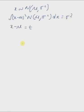and sigma squared. Our goal is to prove that the integral of (X - mu)² multiplied by the normal distribution dx equals sigma squared. Using the variable transformation X - mu = t, we have